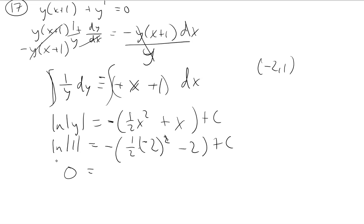All right, so that would be 0, e to the 0 power, so it gives me 1. Let's see, this would be 4 times 2, or divided by 2 would be 2, minus 2. So this would be 0. So I'm getting c is 0.